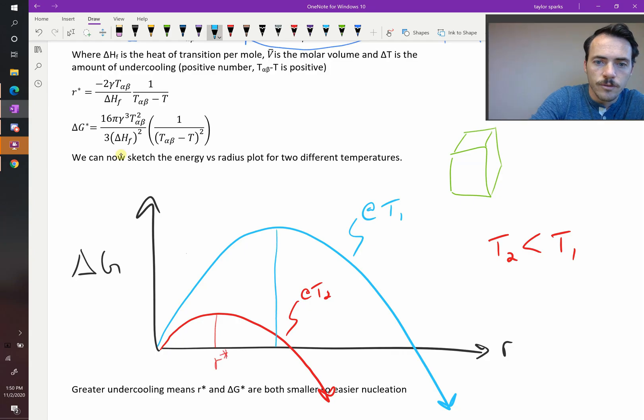You're not only reducing R star. R star got smaller. The critical radii size for this got smaller compared to R1. But the activation energy also changed. Your activation energy delta G star up there was larger than down here. Now we have a smaller activation energy.